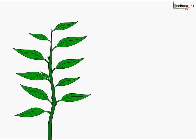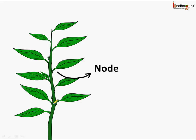How are the leaves attached to the stem? If we see, these are the nodes — these are the parts of the stem from which the leaves arise. And we call it a node.